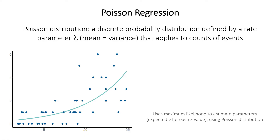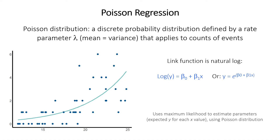Because there's often a curved relationship between our independent and dependent variable, the model uses the natural logarithm as the link function. So we model the log of y as an intercept plus a coefficient times the independent variable and so forth. The model uses maximum likelihood estimation to estimate the parameters based on this Poisson distribution and link function.